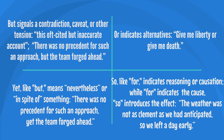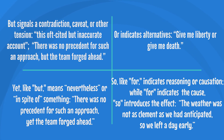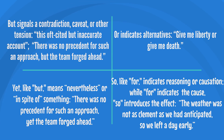'But' signals a contradiction, caveat, or other tension: 'This oft-cited but inaccurate account'; 'There was no precedent for such an approach, but the team forged ahead.' 'Or' indicates alternatives: 'Give me liberty or give me death.' 'Yet,' like 'but,' means nevertheless: 'There was no precedent for such an approach, yet the team forged ahead.' 'So,' like 'for,' indicates reasoning or causation — while 'for' indicates the cause, 'so' introduces the effect: 'The weather was not as clement as we had anticipated, so we left a day early.'